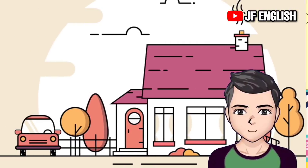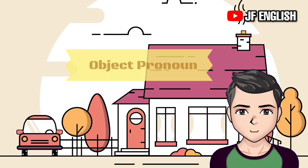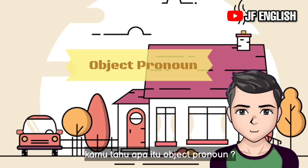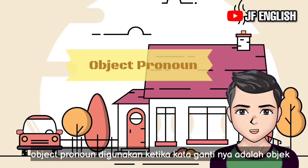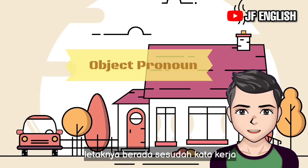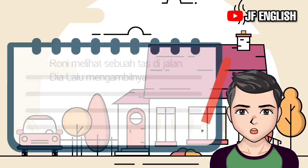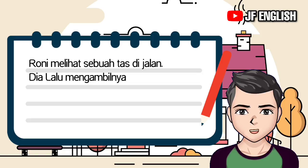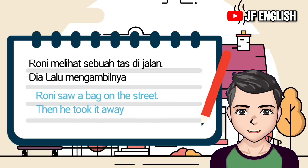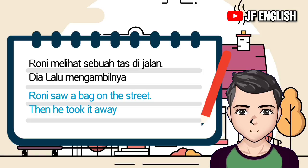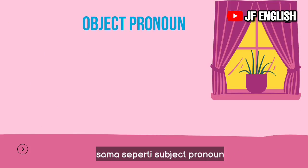Yang kedua adalah object pronoun. Object pronoun is used when the pronoun is the object of the sentence — its position is after the verb. Contoh: Ronnie saw a bag on the street, then he took it away. Kata 'it' merupakan objek, menggantikan kata 'sebuah tas' pada kalimat sebelumnya.